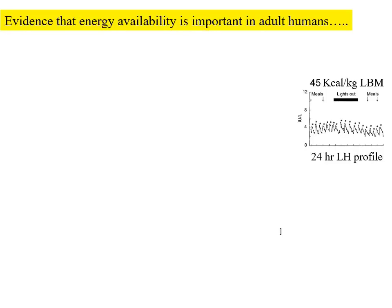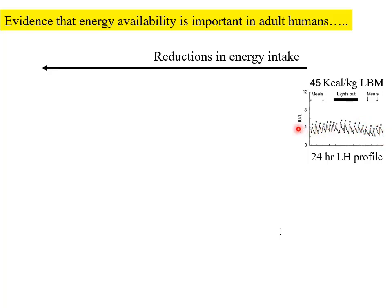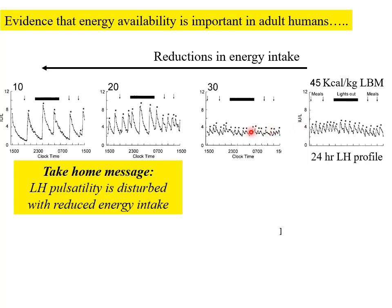But it is obvious that energy availability is important even in normal adults who aren't heavily exercising. Looking at LH pulses over a 24-hour period with high energy intake: as we reduce the energy intake, the pattern of those LH pulses changes. With very limited energy intake, there are much bigger pulses, though not much less frequent. So LH pulsatility is disturbed with changes in energy intake.